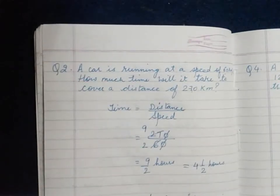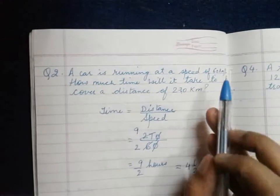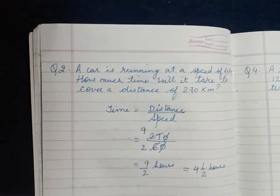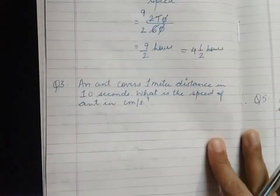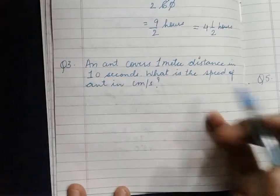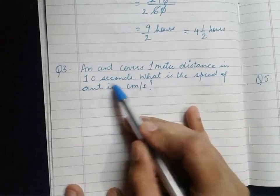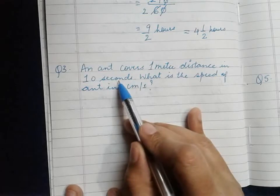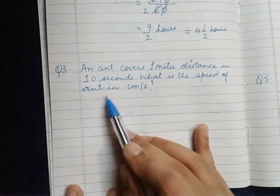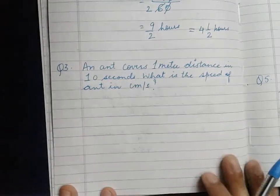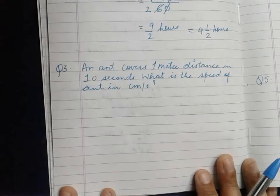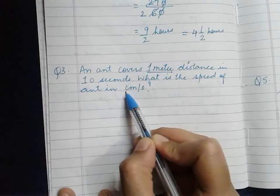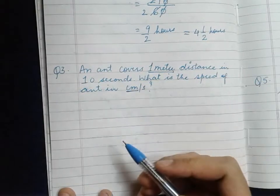First read the question carefully, see what is given, and then apply the formula accordingly. Next question: An ant covers 1 meter distance in 10 seconds. Distance is given as 1 meter, time is given as 10 seconds. What is the speed of the ant in centimeter per second? We have to find speed, but note that distance is given in meters while the required speed unit is centimeter per second.